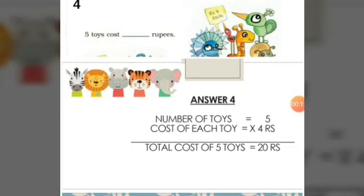Fourth sum: 5 toys cost how many rupees, when the cost of each toy is 4 rupees? Let us solve the sum. The number of toys is 5 and the cost of each toy is 4 rupees. To find the cost of 5 toys, we will multiply 5 into 4, which is equal to 20 rupees.